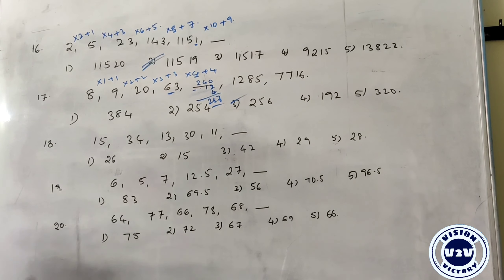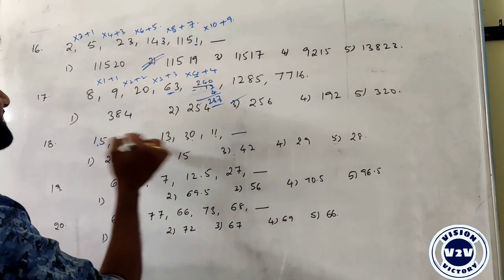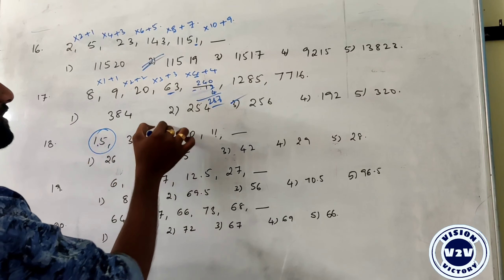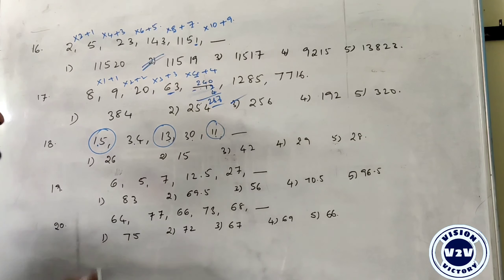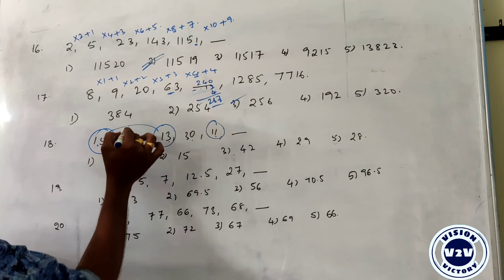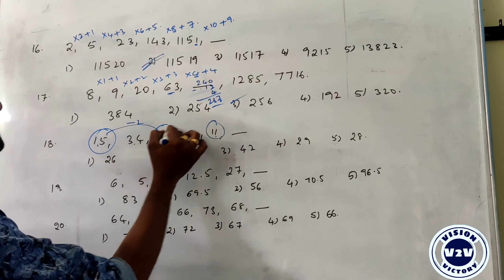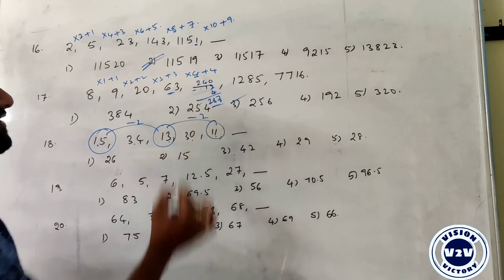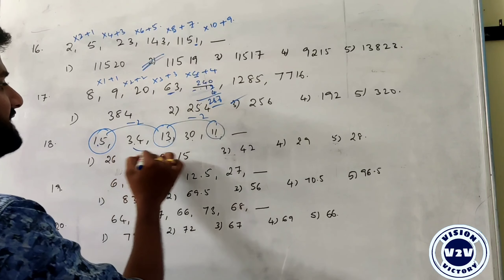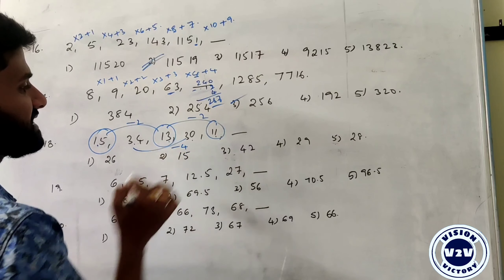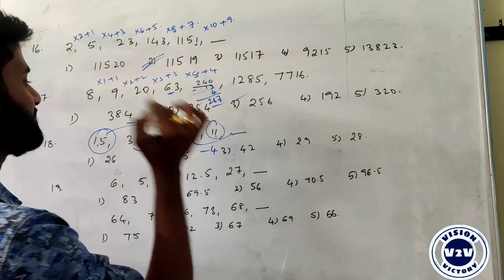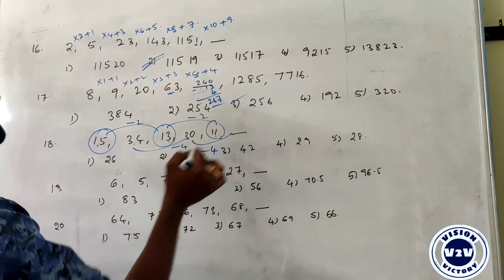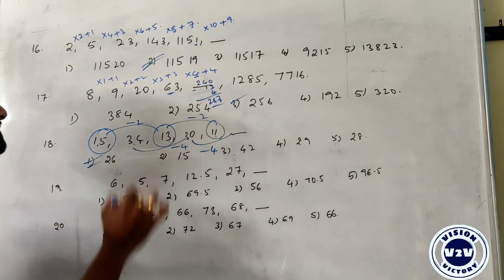Next: 15, 34, 13, 30, 11. This is an alternating series. The odd-position terms decrease by 2: 15, 13, 11. The even-position terms decrease by 4: 34, 30. So the next even-position term is 30 minus 4 = 26. The answer is 26.